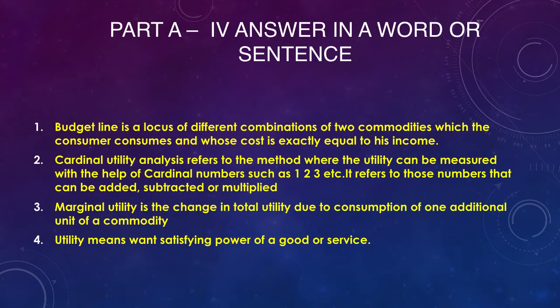Second answer: cardinal utility analysis refers to the method where utility can be measured with the help of cardinal numbers such as 1, 2, 3, etc. — those numbers that can be added, subtracted, or multiplied. Third answer: marginal utility is the change in total utility due to the consumption of one additional unit of a commodity. Fourth answer: utility means the want-satisfying power of a good or service.